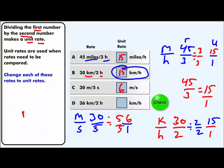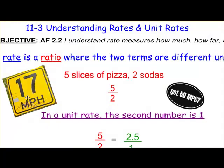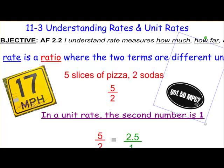Remember, when we see something like miles per hour, this is a unit rate because it means one hour. Miles per gallon is also a unit rate — it means miles per one gallon. Every time you see miles per hour, it means for one hour. Every time you see miles per gallon, it means for one gallon. So 50 to one and 17 to one are unit rates.